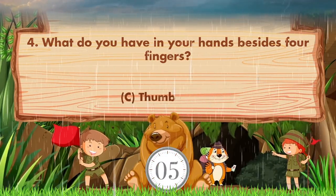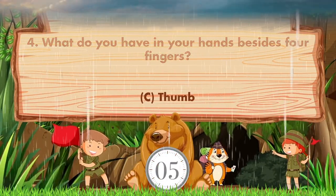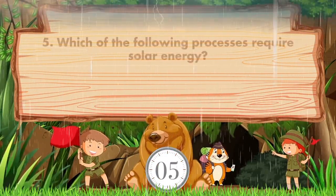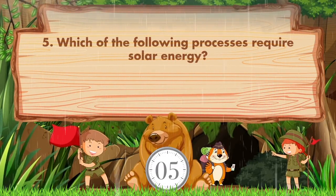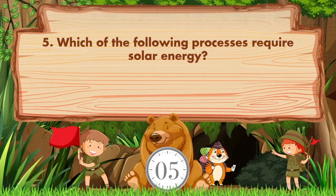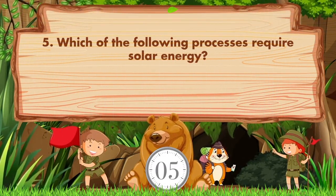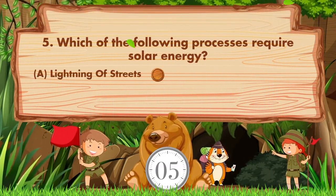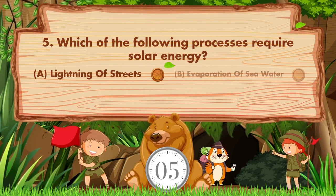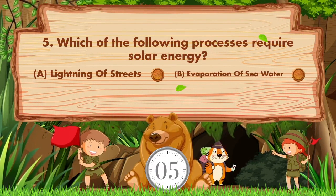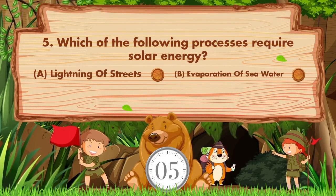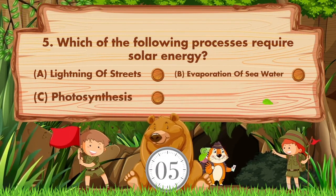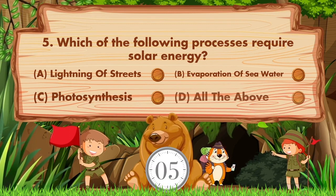Answer is option C, thumb. Which of the following processes requires solar energy? Option A: lighting of streets, B: evaporation of sea water, C: photosynthesis, D: all of the above.